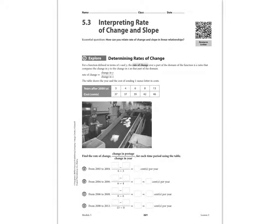Hi there, this is Mr. Bainey, and this lesson is 5.3, Interpreting Rate of Change and Slope. The essential question: how can you relate rate of change and slope in linear relationships?